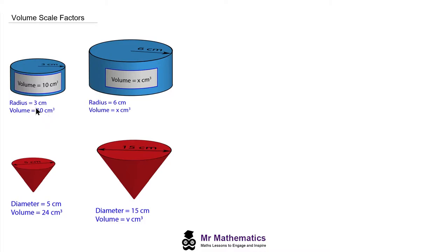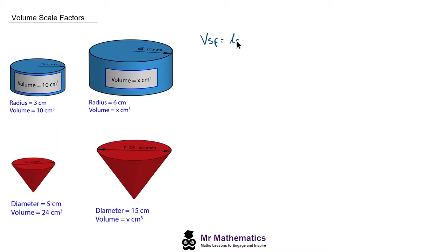We've been told that the radius of the smaller cylinder is 3 centimeters and has a volume of 10 centimeters cubed. The radius of the larger cylinder is 6 centimeters with a volume we've been asked to find, given as x. Because we're going to work out a volume, we need to use the volume scale factor, which is the length scale factor cubed.